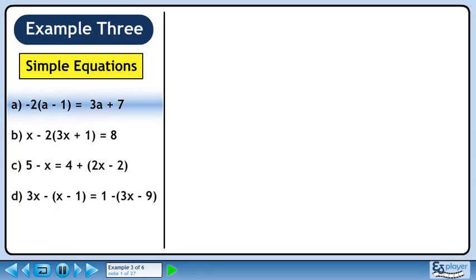All of the questions in this example involve equations with brackets. In part a, we will solve minus 2 times a minus 1 equals 3a plus 7.